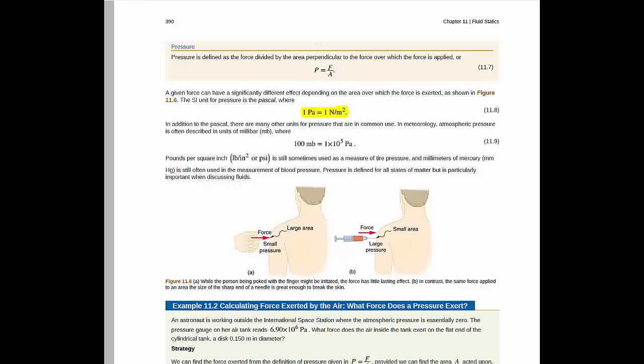However, there are many other units of pressure in common use. There's the millibar, pounds per square inch which is the imperial unit, as well as millimeters of mercury which we will discuss in greater detail when we talk about air pressure.